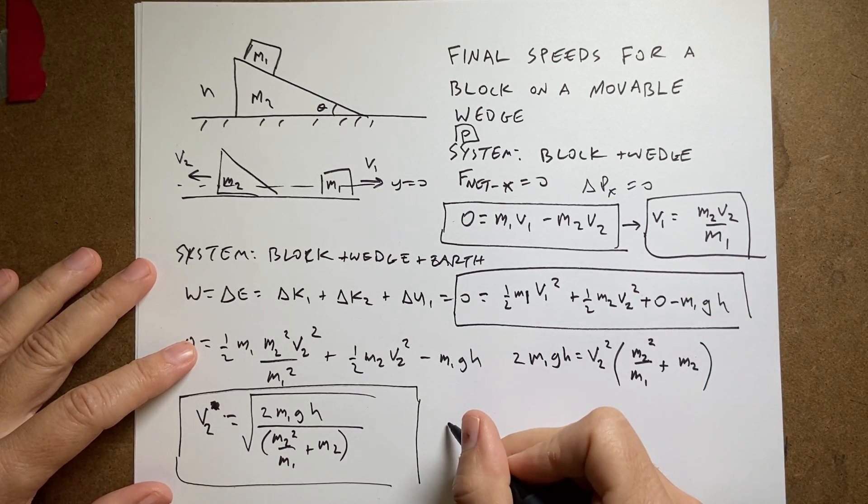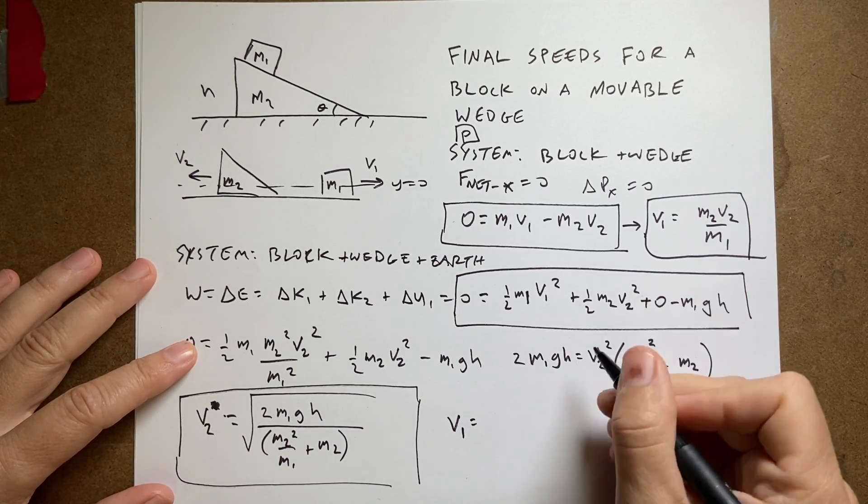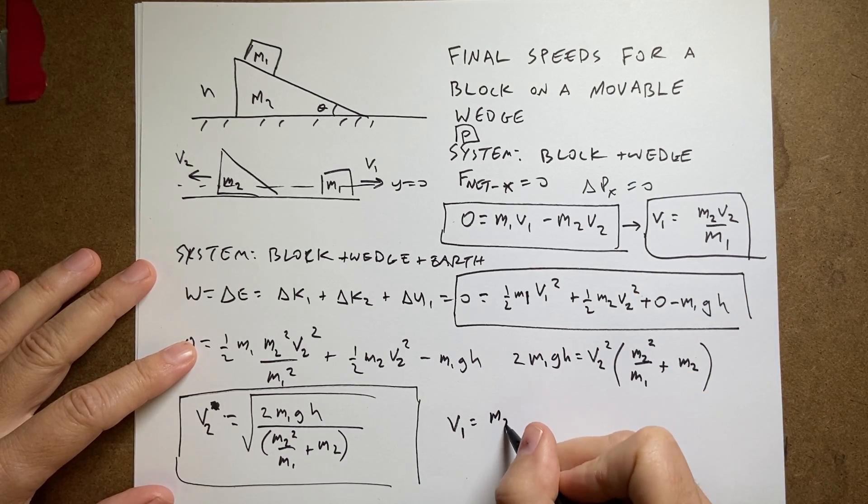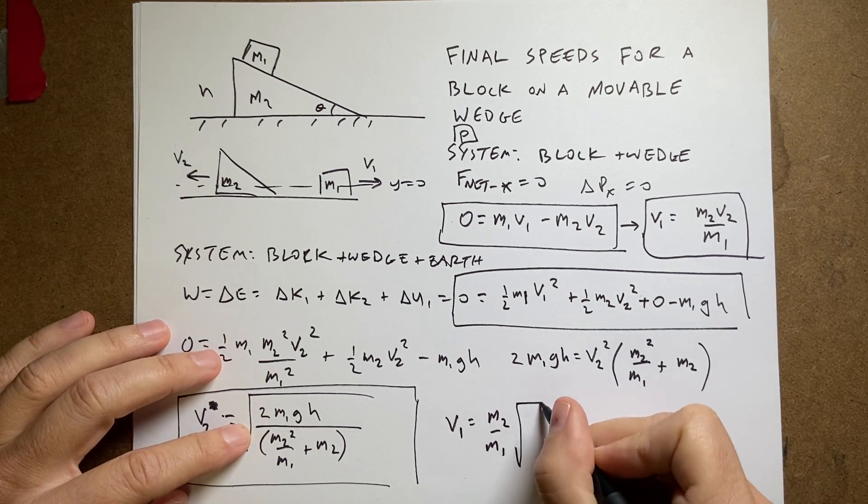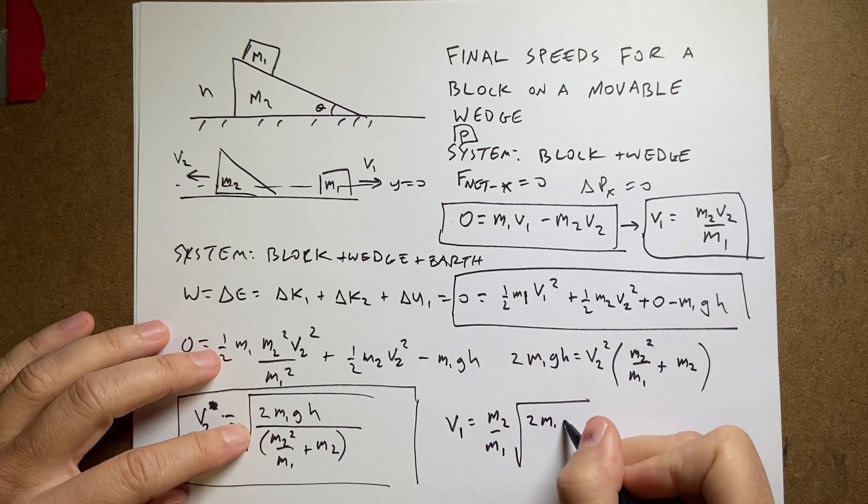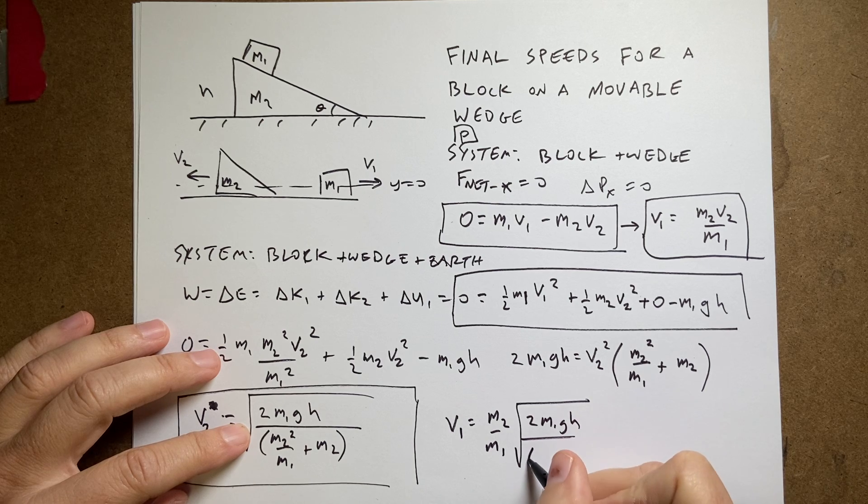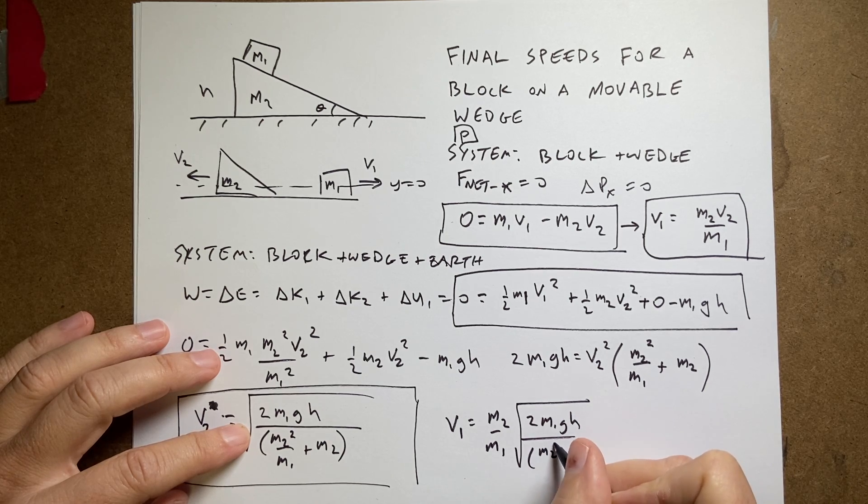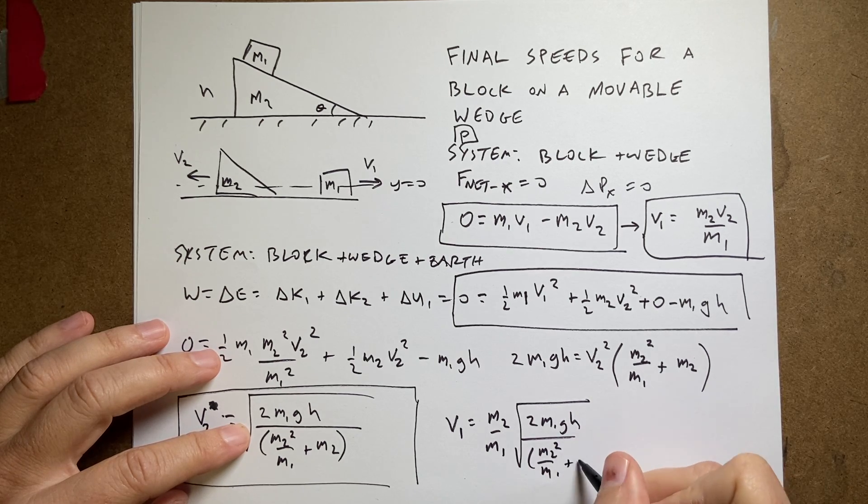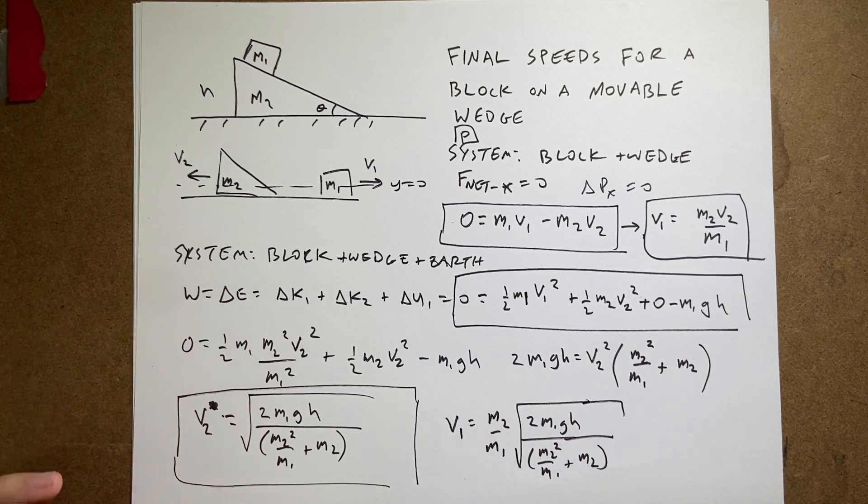So I get 2 M1 GH over M2 squared M1 plus M2. I could factor out an M2 here. I'm just trying to think if I need to do that. I mean, this is the right, I'm on the right track here. Probably getting a better form. But I'm going to leave it like that. That's my V2. And then V1, I can go ahead and write that again as this. It's going to be M2 over M1 times this. So the square root of 2 M1 GH over M2 squared over M1 plus M2.